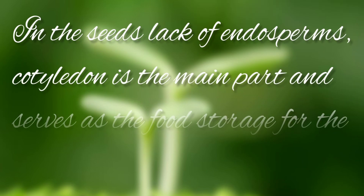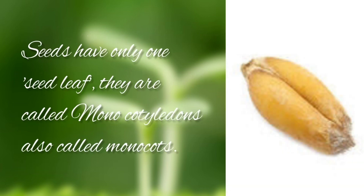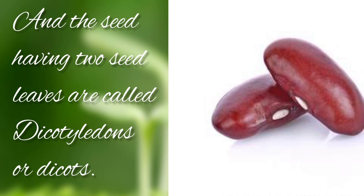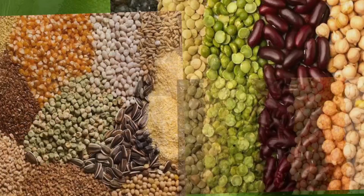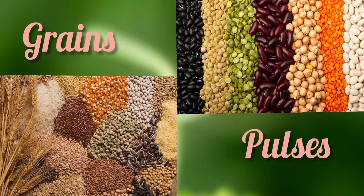Now, in seeds lacking endosperms, cotyledin is the main part and serves as the food storage for the seed. Some seeds have only one seed leaf — they are called monocotyledins, also called monocots. Mono means one. Seeds having two seed leaves are called dicotyledins, or dicots — here 'di' means two. All the grains are monocots and all the pulses are dicots.